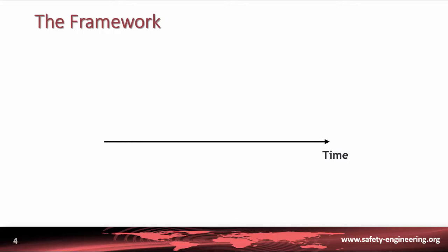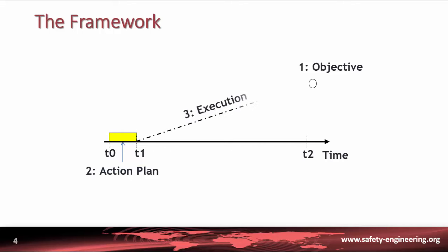To introduce these various perspectives in a simple way, let's take a look at the framework they have in common. The horizontal axis represents the timeline. Firstly, at T0, we set an objective that has to be achieved in the future at T2. Secondly, to achieve this objective we define an action plan. The development of this action plan takes time; its length is depicted by the interval from T0 to T1. Thirdly, the action plan is executed from T1 in order to achieve the objective at T2.